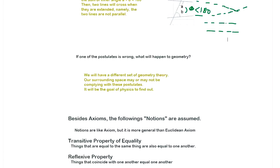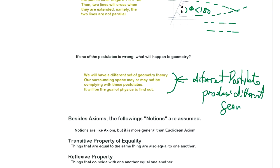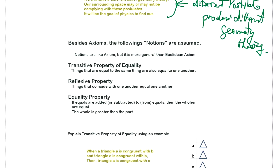The postulate difference makes the entire math theory different. If one of the postulates is wrong, what will happen to geometry? Well, what's happened is geometry theory itself, its entire theory has to be revised. So if different postulate produce a different geometry theory. Besides axiom, the following notions are assumed. Here's a lot of vague words. Axiom and notions.